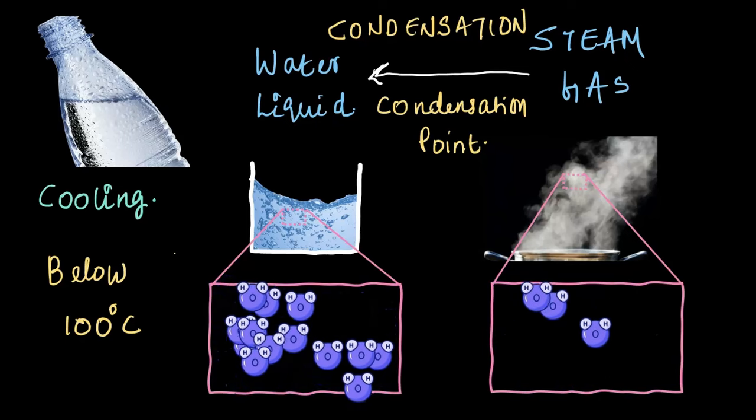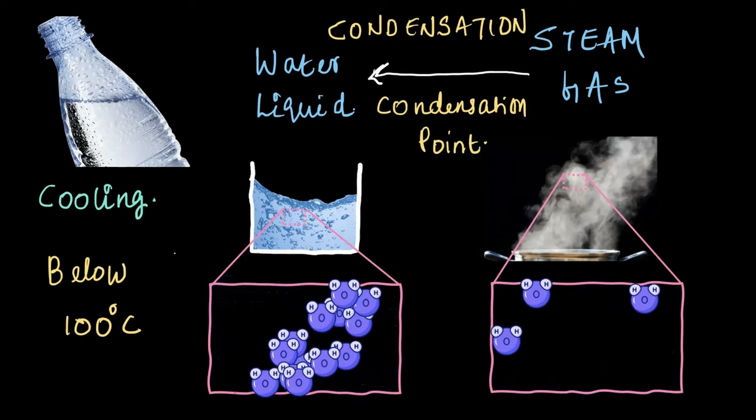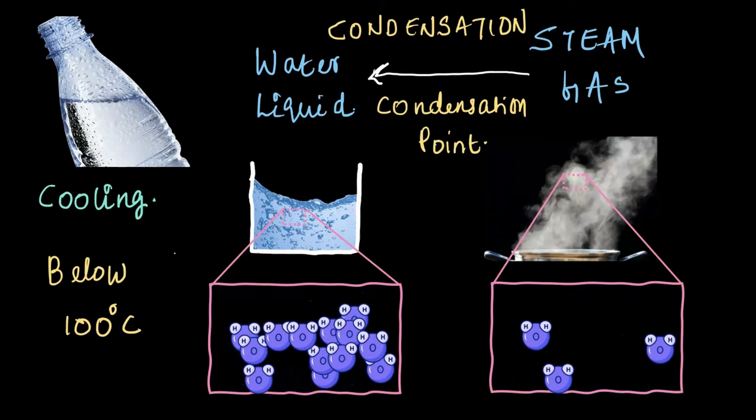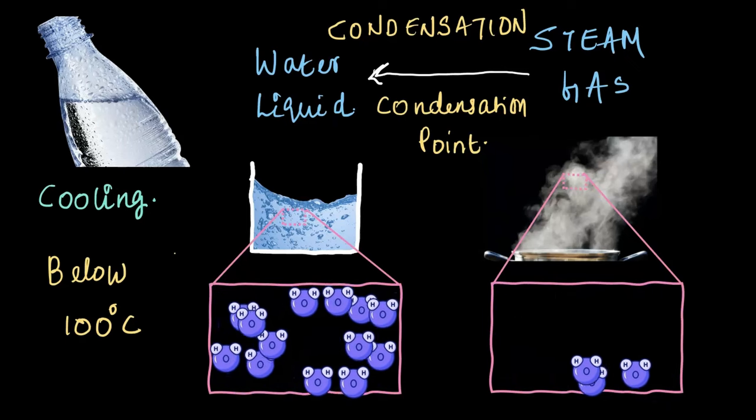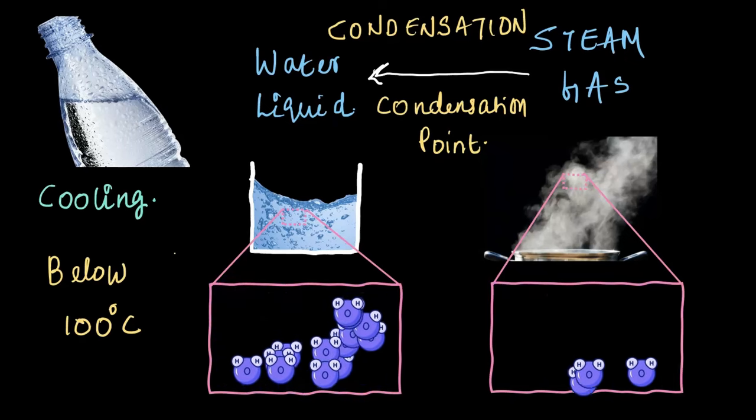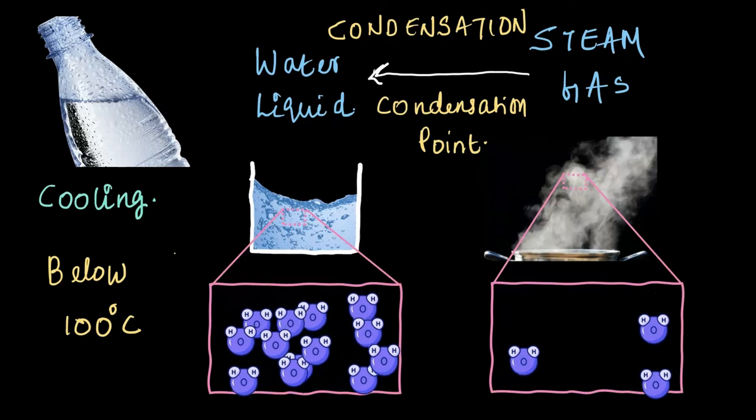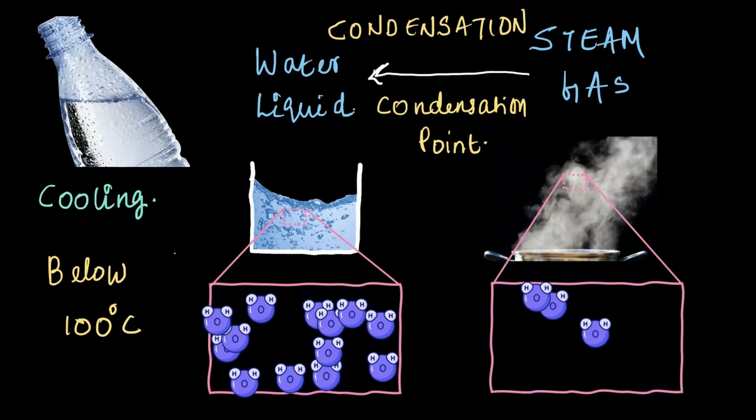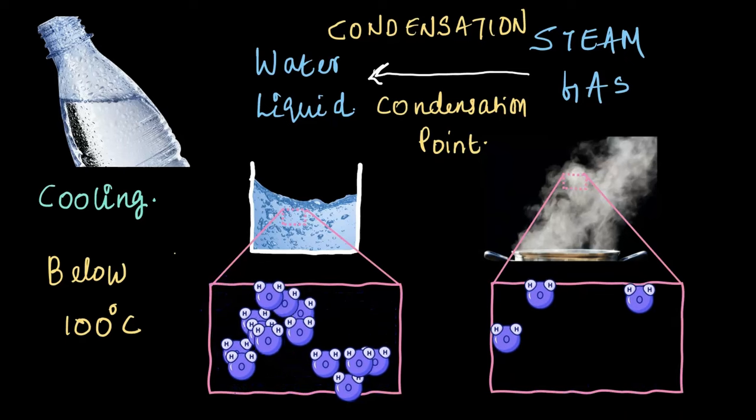The temperature at which this happens for water is 100 degrees Celsius and is called the condensation point. What you see here is a classic real-life example of condensation. You probably notice this every day, right? When you have a cold water bottle, water vapor in the air condenses on the surface of the bottle and forms droplets of liquid.